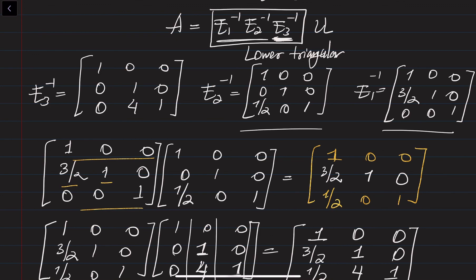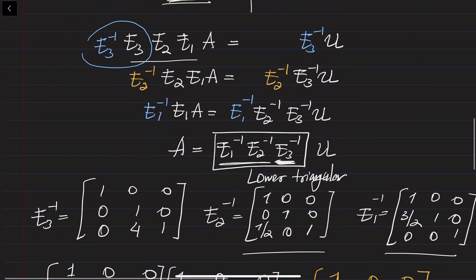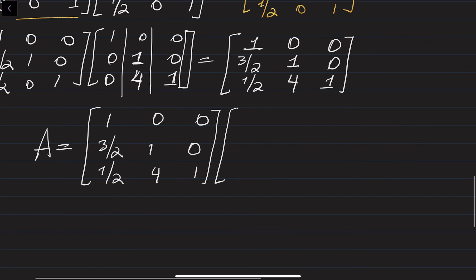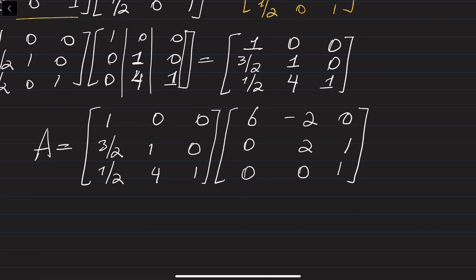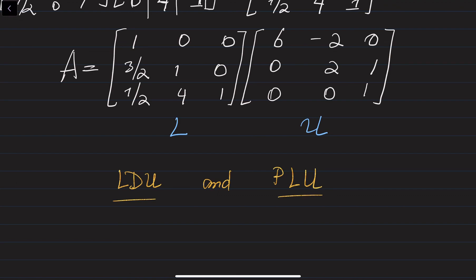So A equals L times U, where L = [[1, 0, 0], [3/2, 1, 0], [1/2, 4, 1]] and U = [[6, -2, 0], [0, 2, 1], [0, 0, 1]]. This is how we get the LU decomposition. In our next video lecture, we are going to discuss two different modifications: the LDU decomposition and the PLU decomposition. These are needed in order to solve a system of linear equations much more easily. Our ultimate goal is to show you how to solve a system of linear equations using the LU decomposition. Thank you.